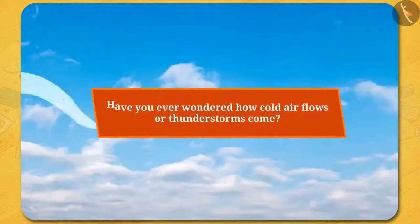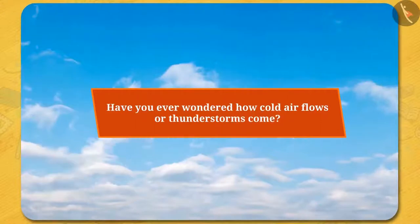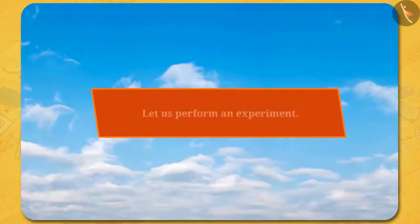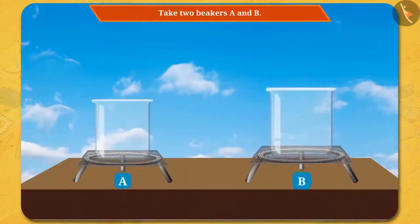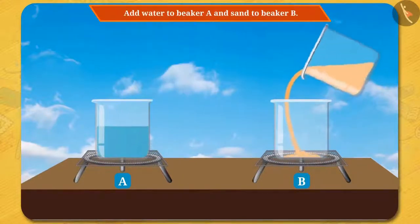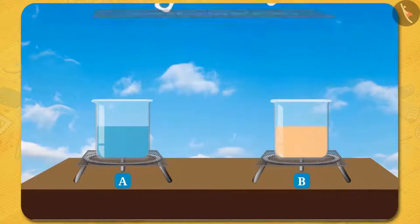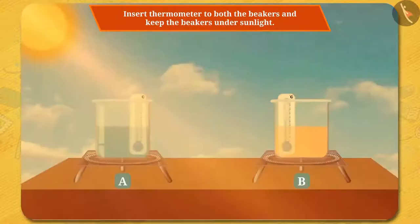Friends, have you ever wondered how cold air flows or thunderstorms come? In order to understand, let us perform an experiment. Take two beakers A and B. Add water to beaker A and sand to beaker B, and after that, insert a thermometer into both beakers. Now, keep the beakers under sunlight.